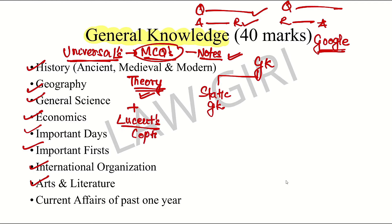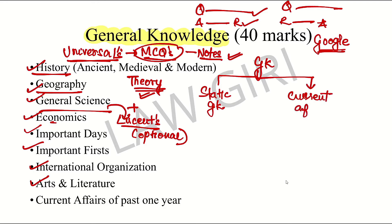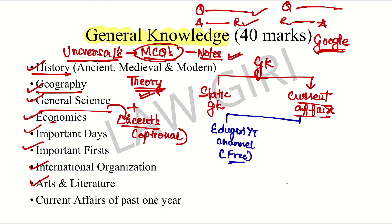It is very optional — if there is time, do Universal's theory for History, Geography, Science topics as well. Now for Current Affairs: here I am going to give you very good advice. Follow the EduGary YouTube channel — it is free of cost. For current affairs, you should cover one full year, so if your exam is in March, cover from April onwards.